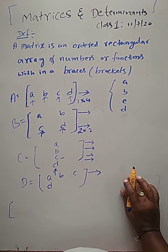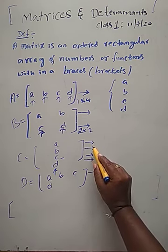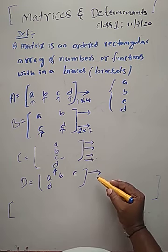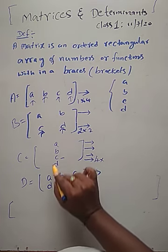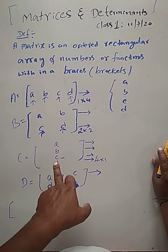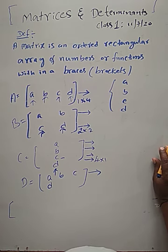Then come to the third matrix C. How many horizontal lines are there? One, two, three, four — four horizontal lines. Hence four cross one: how many vertical lines are there? Only one. Hence four cross one. This is a matrix of order four cross one — four rows, one column. Then what is the order of matrix D? D is not a matrix at all, so we can't say the number of rows and number of columns.